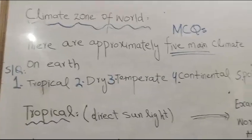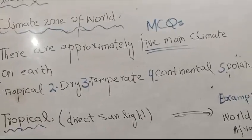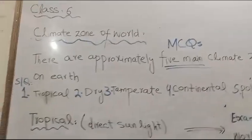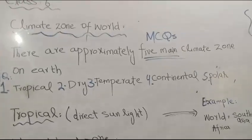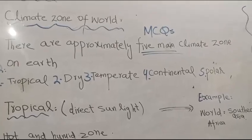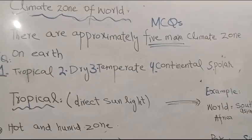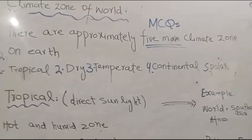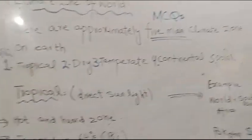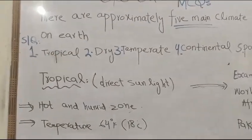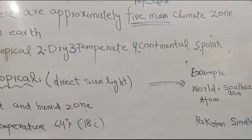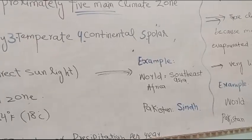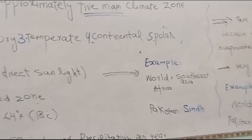First of all, how many climate zones are present on Earth? You can expect MCQs on this. How many climate zones are on Earth? The main climate zones number 5. Their names are: first, tropical; second, dry; third, temperate; fourth, continental; and fifth, polar. Today we will only cover two, and the next lecture we will start from where we leave off.